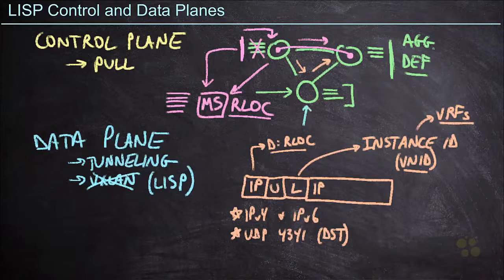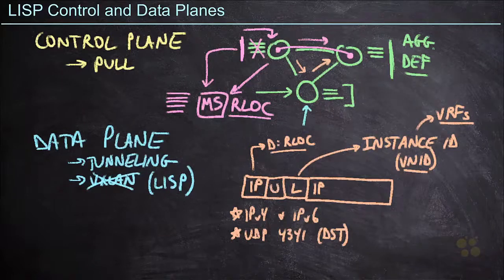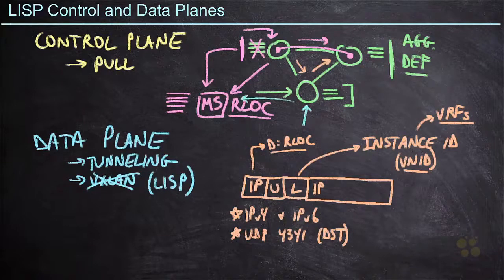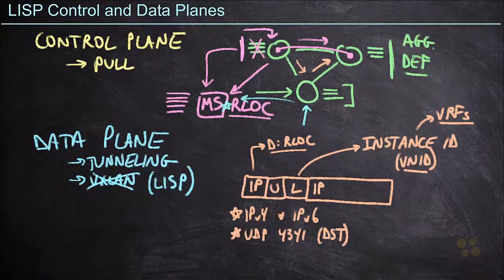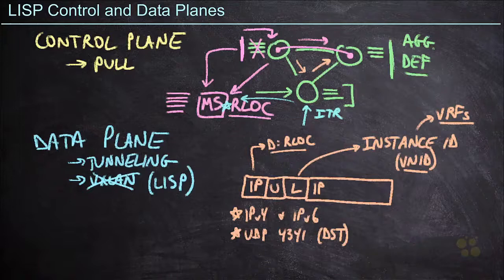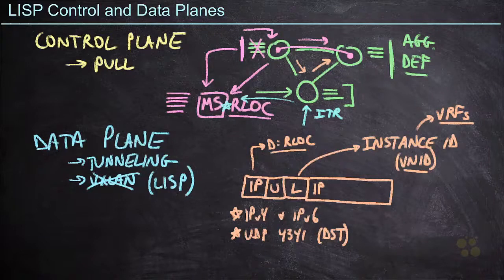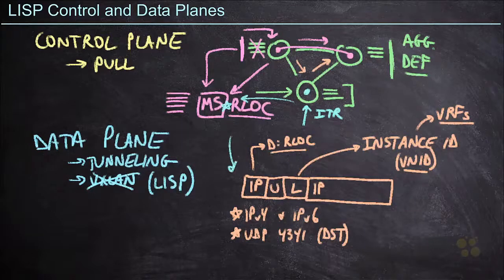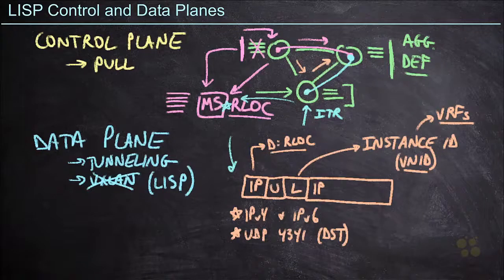So, when we have traffic that shows up on a particular router, that router is going to reach out to the mapping server and obtain the RLOC information. At this point, this is what we call the ingress tunneling router, or ITR. That's a LISP term that we use to describe the router that's on the inbound side of this traffic. And we're going to encapsulate that into our packet using the methodology described down here and send it to the destination RLOC. In this case, we call this the egress tunneling router, or ETR.